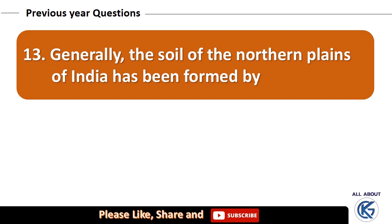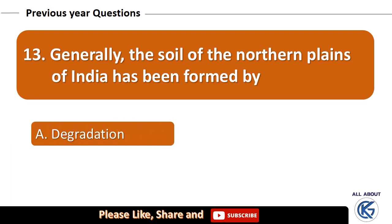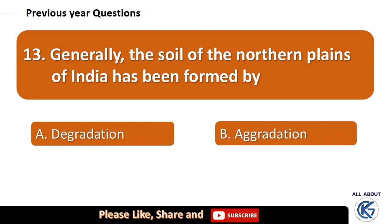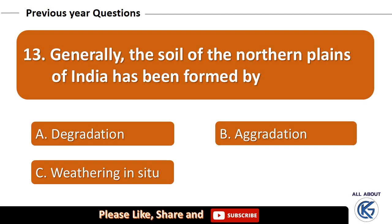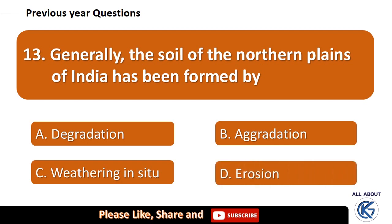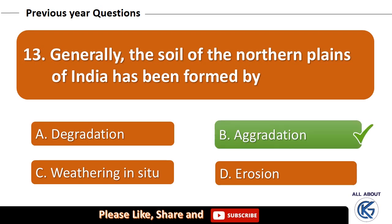Generally, the soil of the northern plains of India has been formed by: degradation, aggradation, weathering in situ, or erosion? The right answer is aggradation.